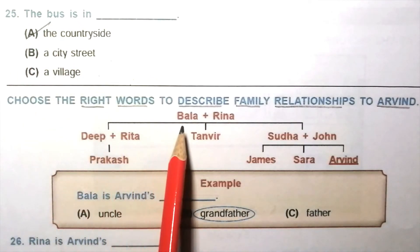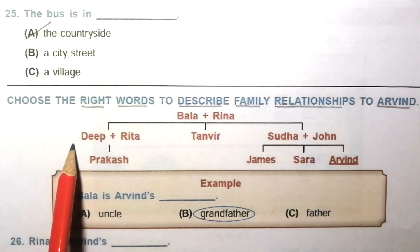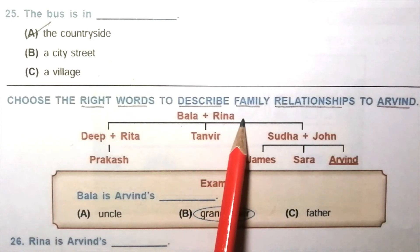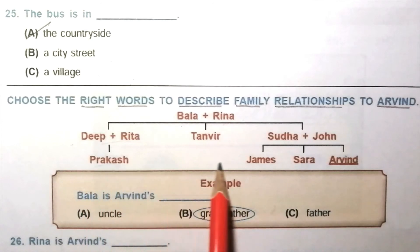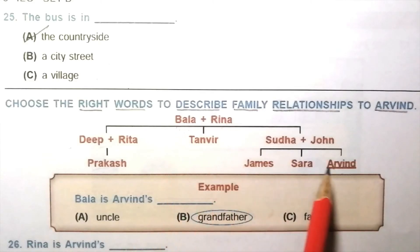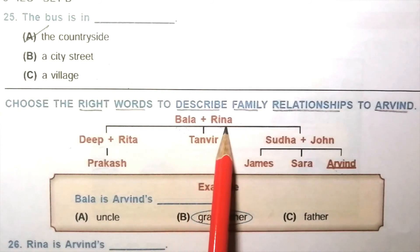Choose the right words to describe family relationships to Arvind. So you read the flowchart carefully. Example: Bala is Arvind's grandfather. Arvind is here and Bala is here. Bala plus Rina is the first generation. This is the second generation. This is the third generation. So the relation between Bala and Arvind. Bala is Arvind's grandfather. Question 26: Rina is Arvind's blank. Cousin, grandmother. We know Bala is Arvind's grandfather. Rina is Bala's wife. So Rina is Arvind's grandmother. The answer is C, grandmother.